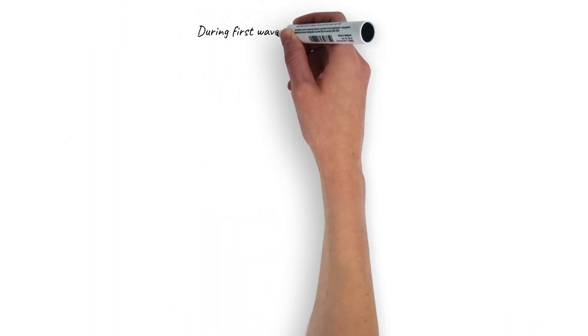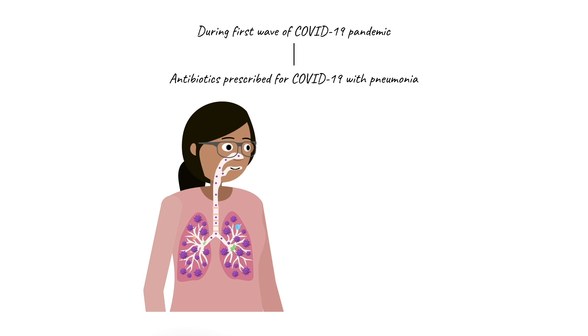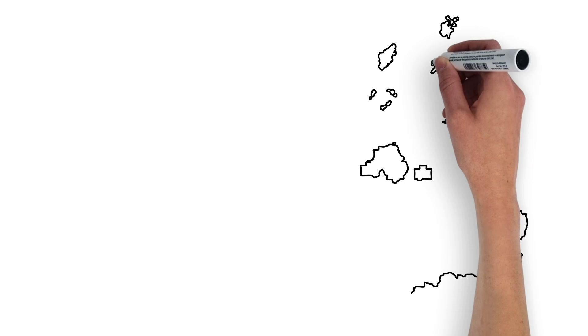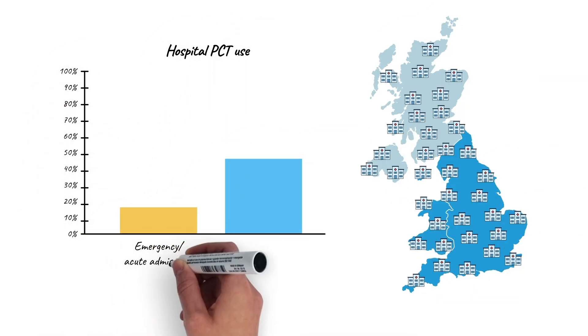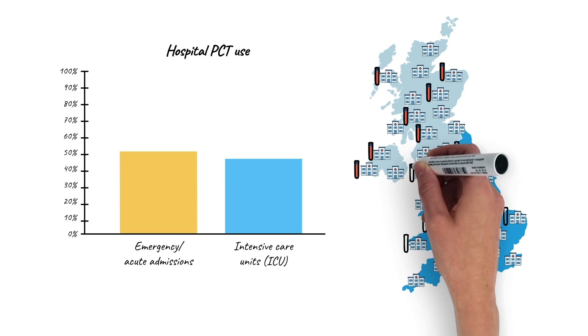Initially, antibiotics were prescribed for patients with COVID-19 pneumonia based on concerns about bacterial co-infections. The number of hospitals using PCT rose from 11% to 51% in emergency or acute admissions.